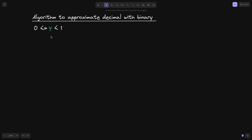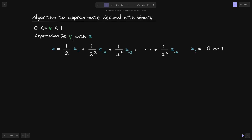To begin, we start with a decimal number y that we want to approximate, where y is greater than or equal to 0 and less than 1. We approximate y with a binary representation z, where z equals (1/2)·z⁻¹ + (1/2²)·z⁻² and so on up to n. Each of z⁻¹, z⁻², z⁻³ all the way up to z⁻ⁿ are either 0s or 1s — we're approximating y with powers of 1/2.